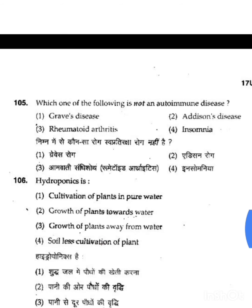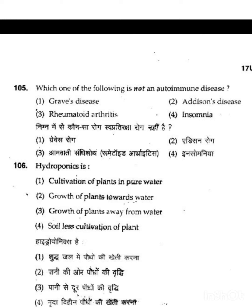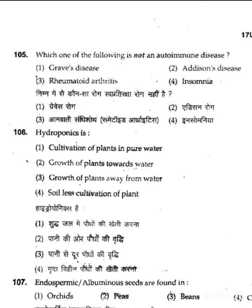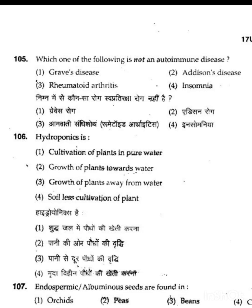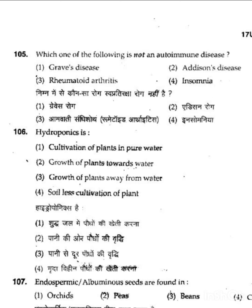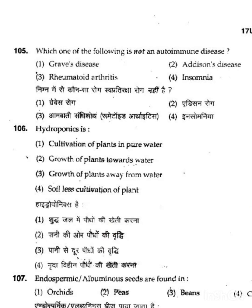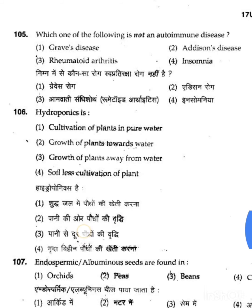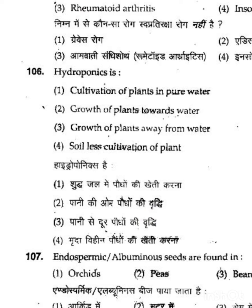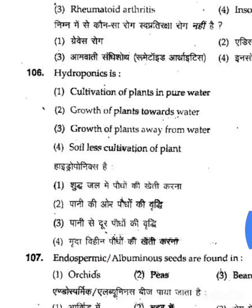Question 105 asks which one of the following is NOT an autoimmune disease. Autoimmune diseases are those where the immune system attacks the body's own cells. Graves' disease, Addison's disease, and rheumatoid arthritis are all autoimmune diseases. The fourth option, insomnia, is not an autoimmune disease — it is a sleep disorder in which a person has difficulty sleeping. So the correct answer for 105 is insomnia.